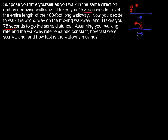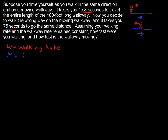So what is happening here? First of all, let's define some variables — that's a very good start after you draw a picture. I'm going to use W as your walking rate. And I'll make M equal to the moving walkway rate.